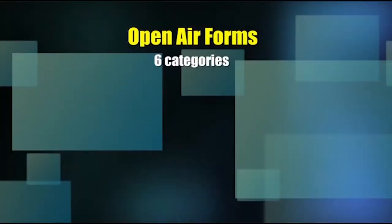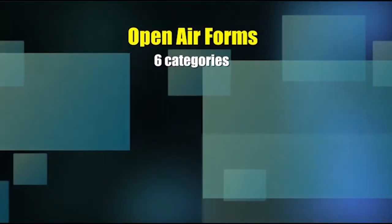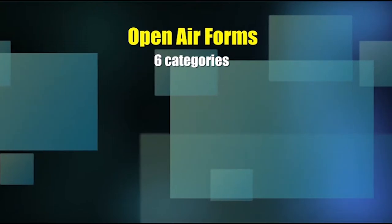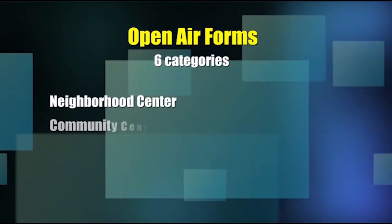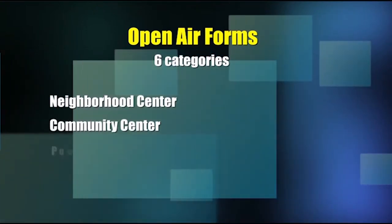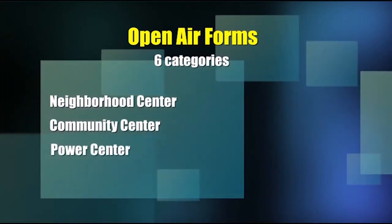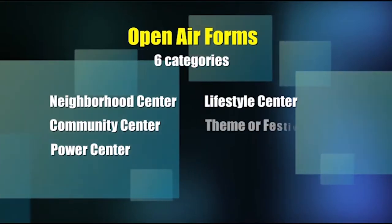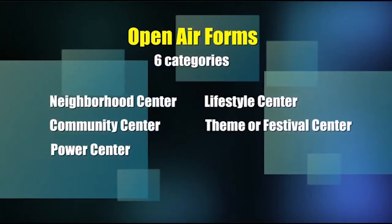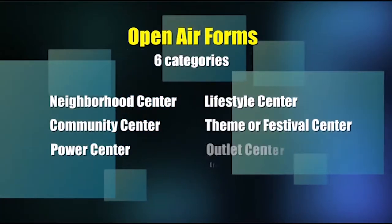I'm still trying to figure out what the Mall of America is since it draws people from about 2,000 miles away and probably has its own zip code. Open air forms are divided into six categories including neighborhood center, community center, power center, lifestyle center, theme or festival center, and my wife's favorite — the outlet center.